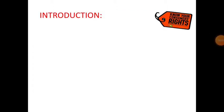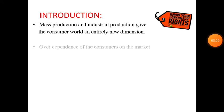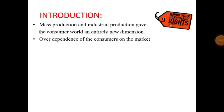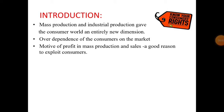In this scenario, we pay price for the things we get from the market, which leads to mass production of goods and services. Mass production and industrial production gave the consumer world an entirely new dimension. We as consumers are dependent on the markets for the fulfilment of basic needs. Therefore, over-dependence of consumers on the market and the motive of profit in mass production has given manufacturers and dealers a good reason to exploit consumers.